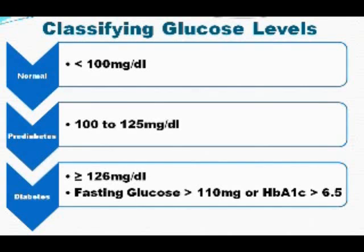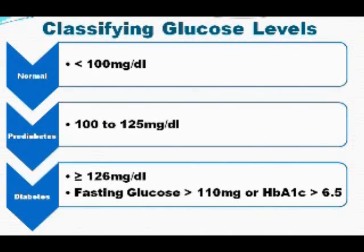The hemoglobin A1c is a measure to determine what your blood glucose level has been over a period of three to four months. It gives us a better picture of how your body is really metabolizing glucose, as opposed to just one blood test. People often try to be on their best behavior for a day or two before a glucose test, but we cannot fool the hemoglobin A1c. It should be less than 7, and greater than 6.5 is criteria for diabetes.